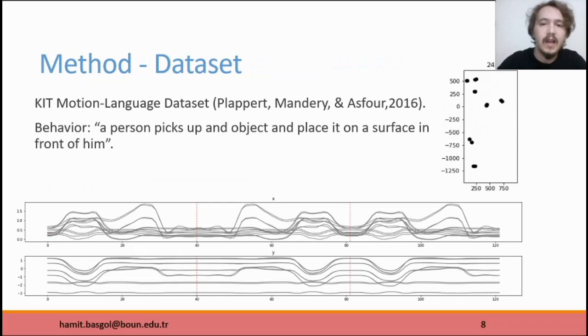We take behavior from KIT motion language dataset. To represent events, we use X and Y positions of 14 markers. The sequence is normalized and the FPS rate is reduced from 120 to 12. The figure below represents X and Y trajectories of points. We give this sequence to our method for segmentation and learning.